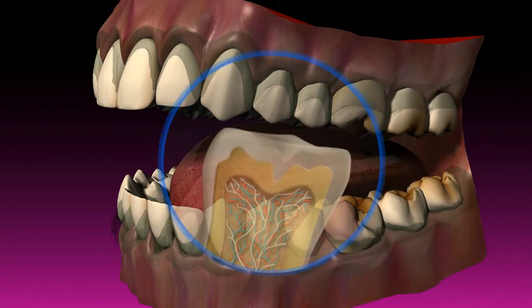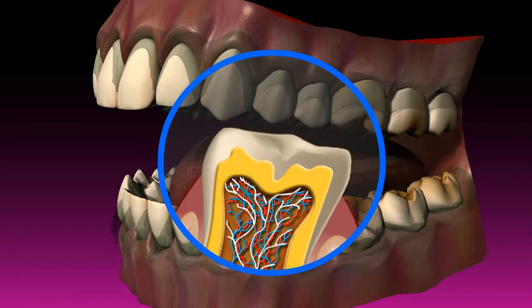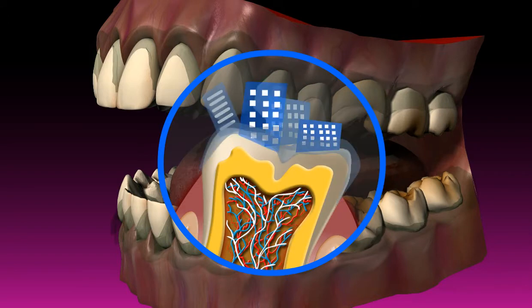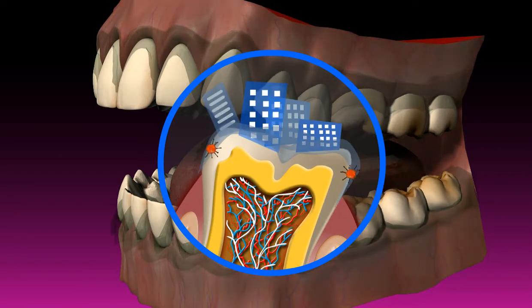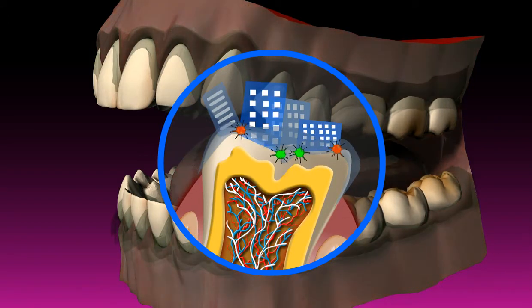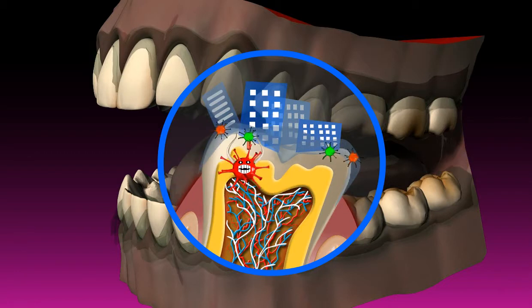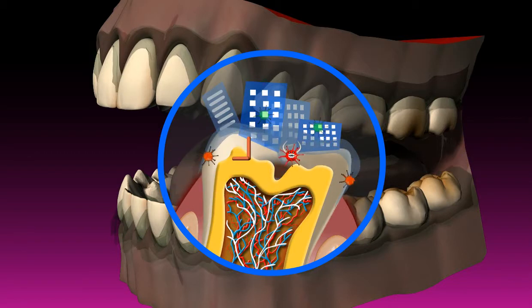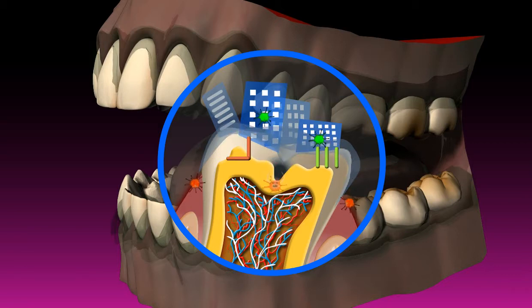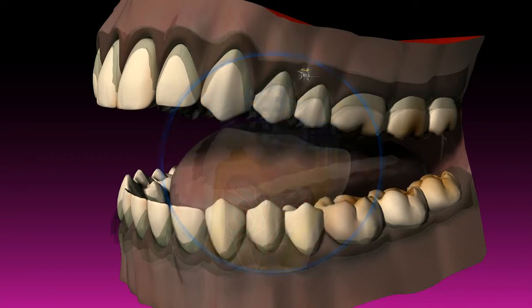Mature plaque is organized exactly like a small town. There are bacteria whose only specialization is sticking to the tooth, other bacteria that form tubes in which nutrients are transported, and yet other bacteria that dissolve the dental enamel and thus produce energy for the plaque, to specify just a few.